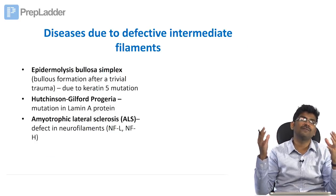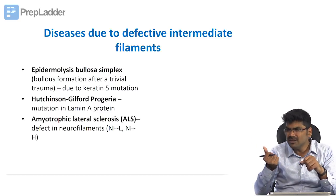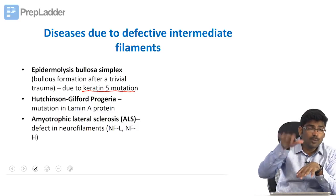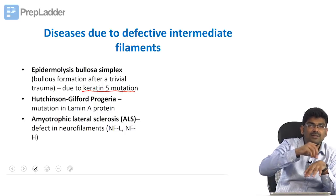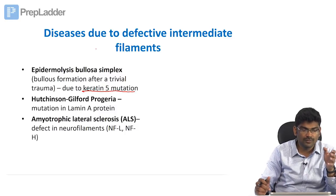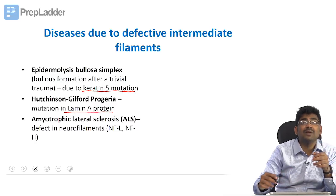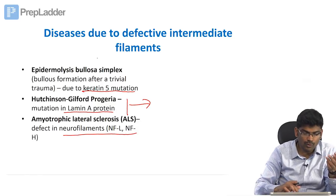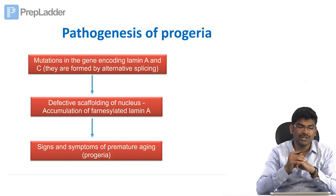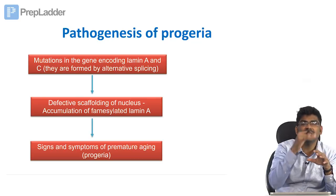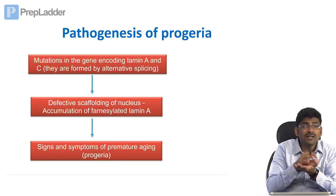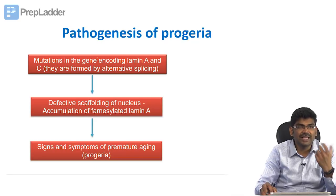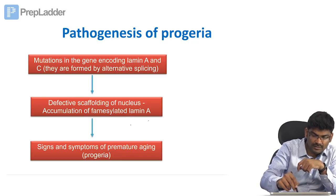Diseases due to defective intermediate filaments: Epidermolysis bullosa simplex — trivial injury causes bullous formation due to keratin 5 mutation, which disrupts mechanical support leading to dissociation of cells. Hutchinson-Gilford progeria — a prototype progeria with a mutation in lamin A; defective farnesylated lamin A accumulates, interfering with ordinary nuclear functions and causing premature aging. Amyotrophic lateral sclerosis (ALS) involves a defect in neurofilaments.